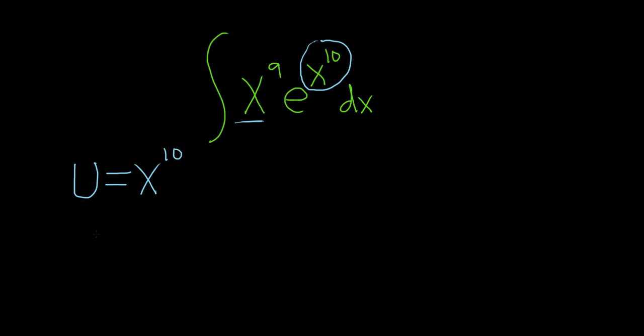And now we have to find the derivative. So du is equal to, you put the 10 in the front, so we get 10x, and then we subtract 1, 10x to the ninth. That's the power rule. And don't forget the dx.